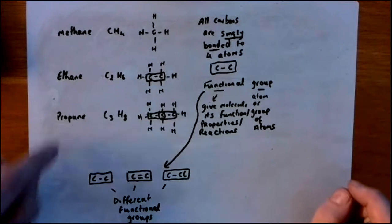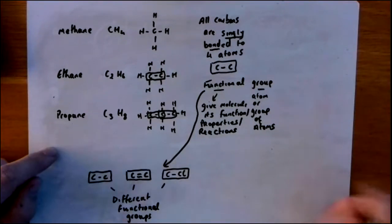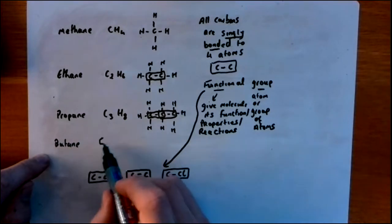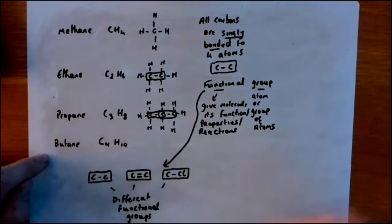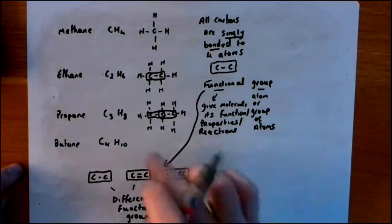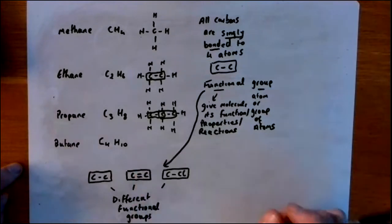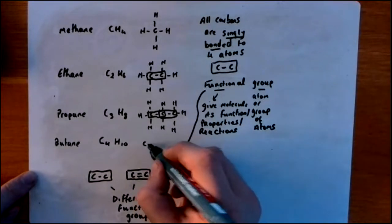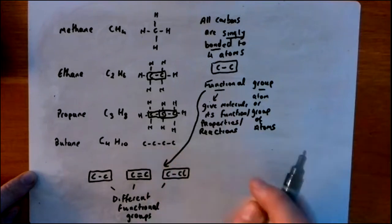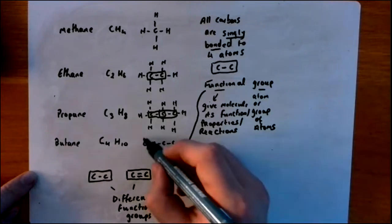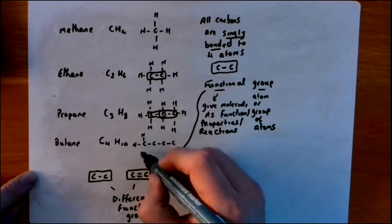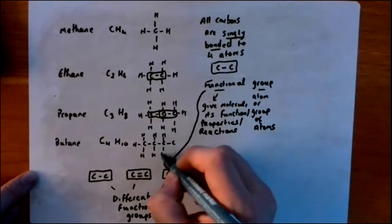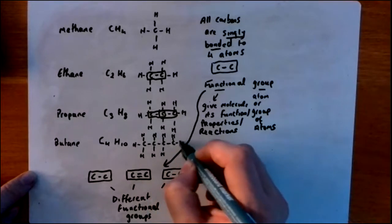I'm going to ask you to draw the next one. It's called butane and its formula is C4H10. See if you can draw that for me now — pause the video. You should have four C's in a row, and each carbon should have four bonds: three hydrogens on the first carbon, two on each middle carbon, and three on the end carbon.